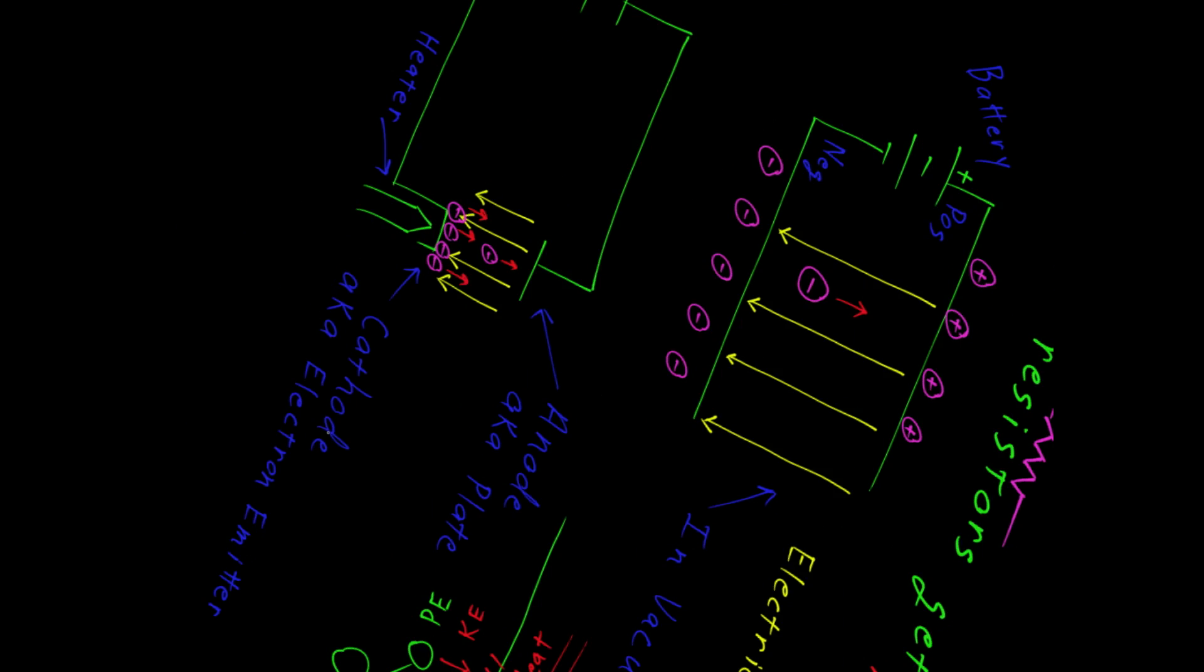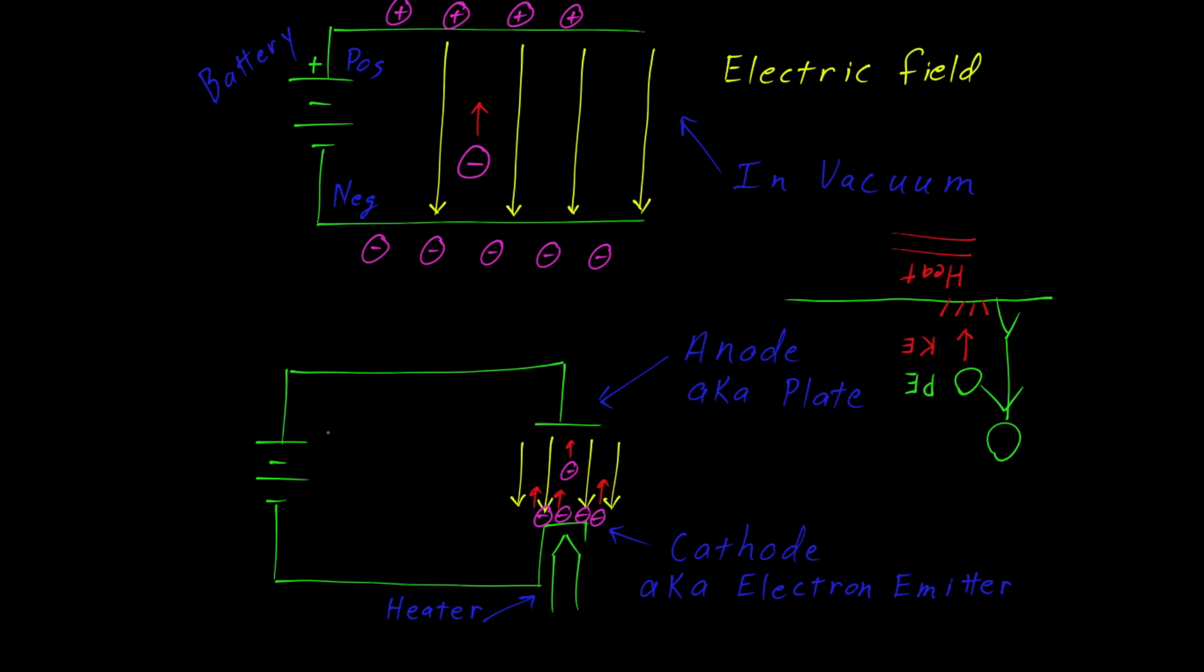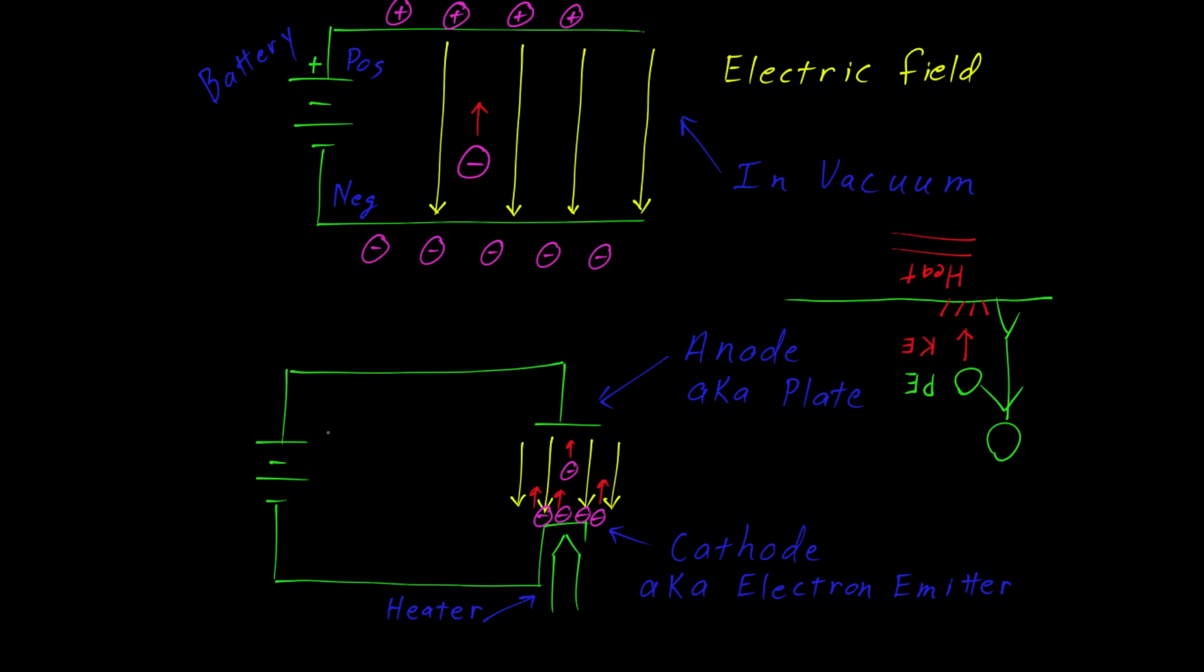Returning to our vacuum tube model, we see that the situation is the same. The electrons, when they start out at the cathode, have potential energy. As the electrons transition from the cathode to the anode, that potential energy is converted to kinetic energy.